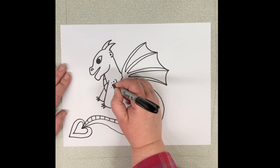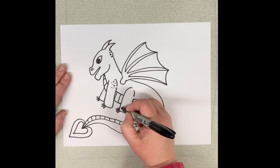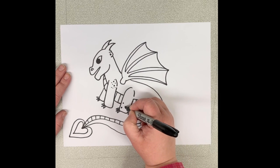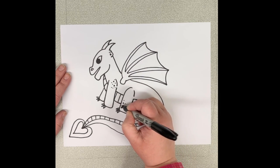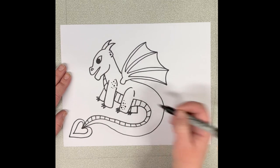And now we're going to add some details. So I'm just going to put some big black dots and small black dots. Just to give him some extra features.